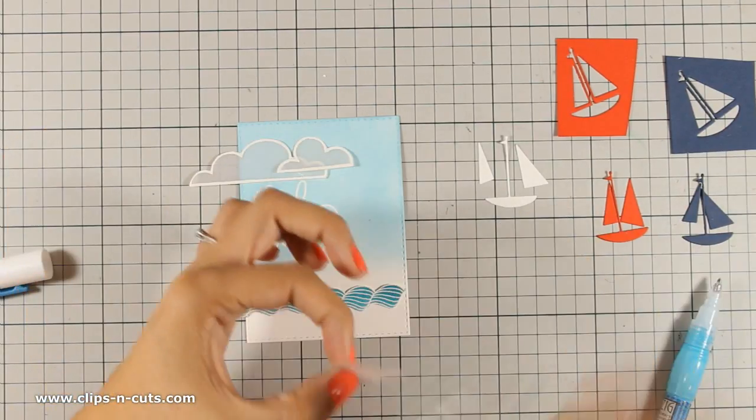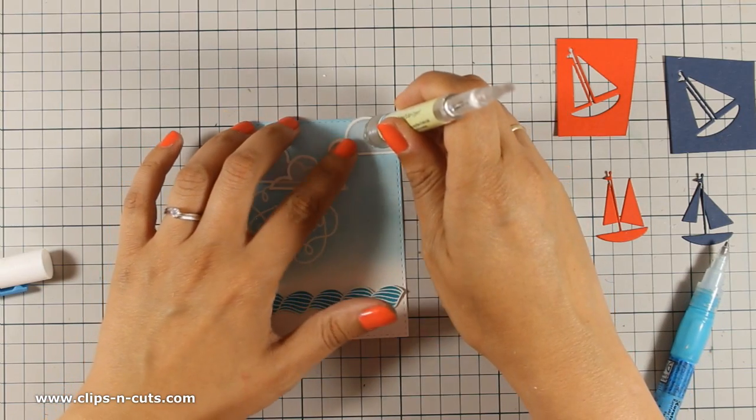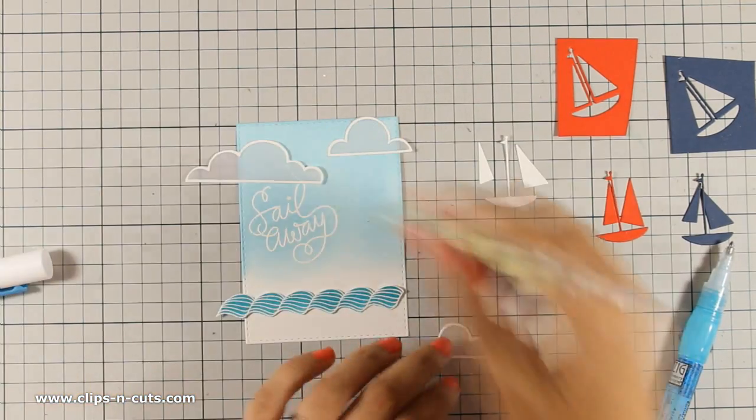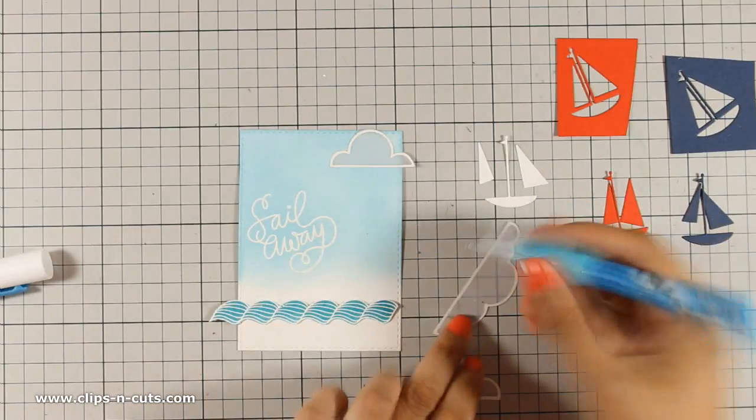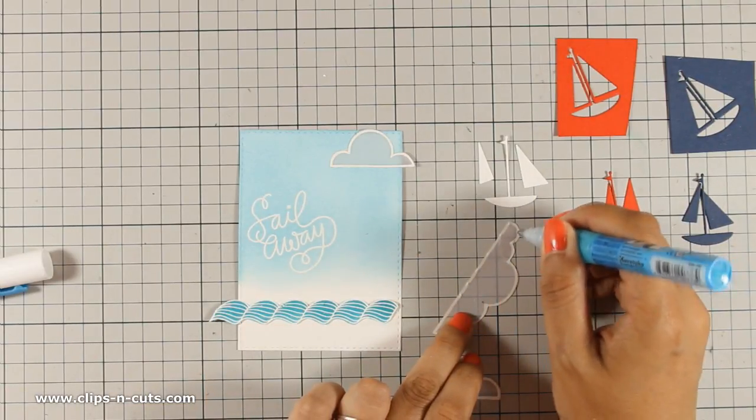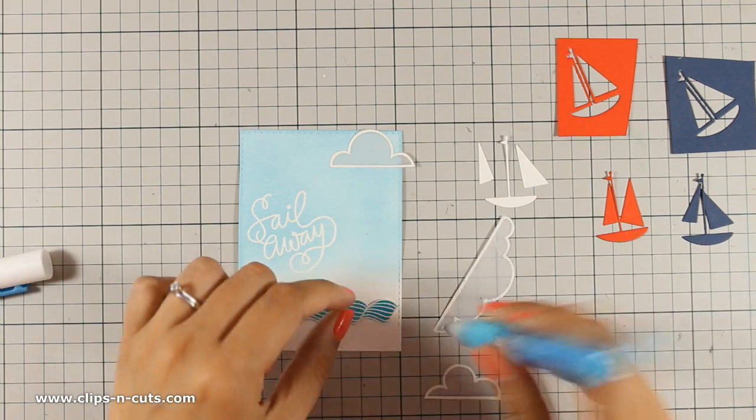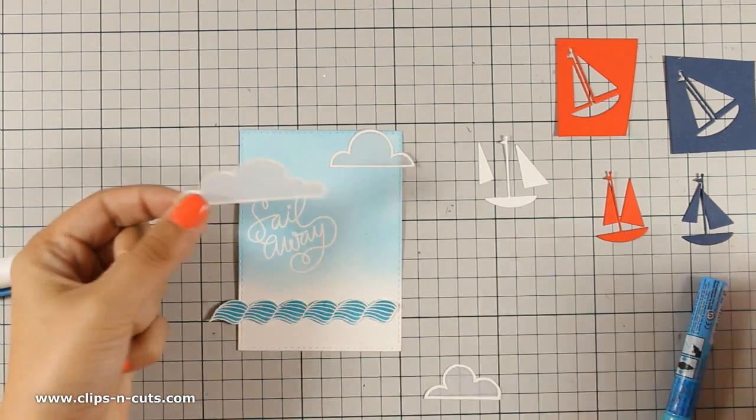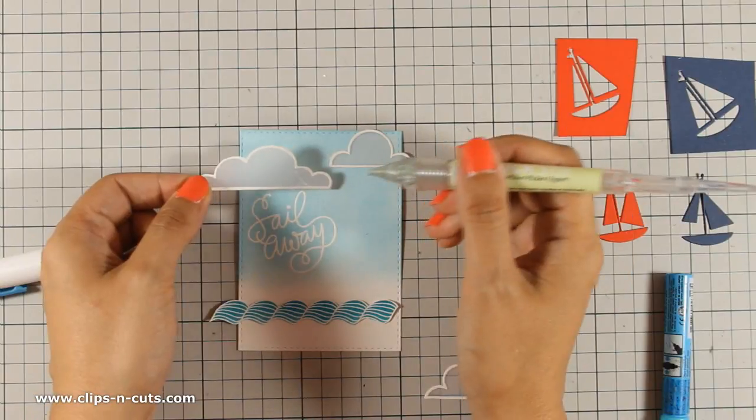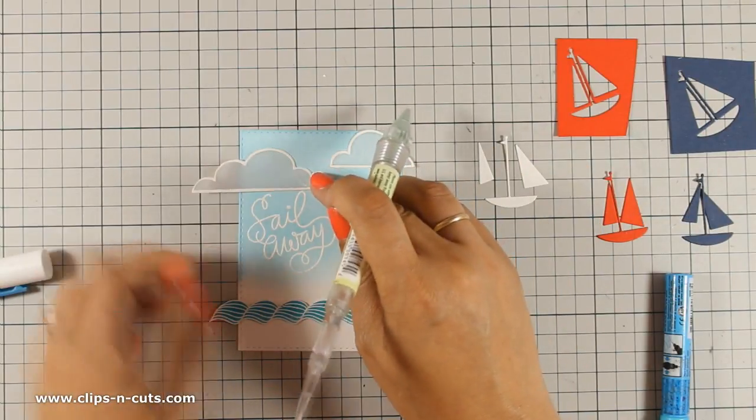So before I go ahead and assemble my sailboat I am going to stick the clouds on their place and I am using my glue pen making sure that I add dots of glue at the back of the cloud just where the white embossing is. So this is going to make sure that the glue won't show through.